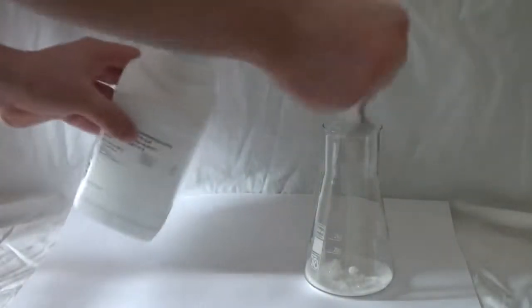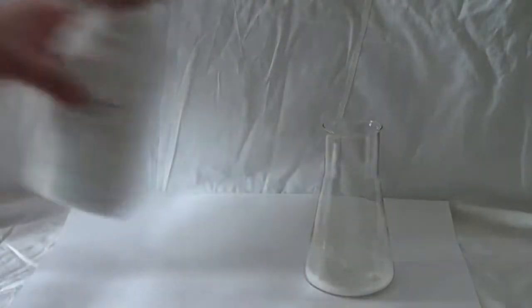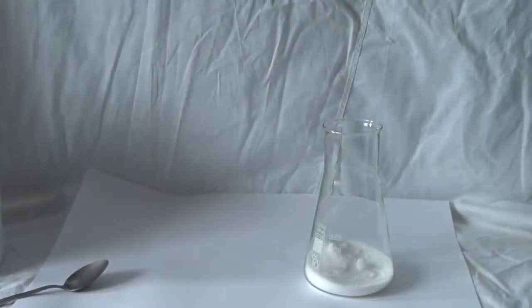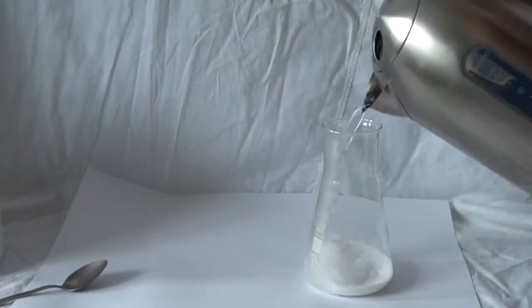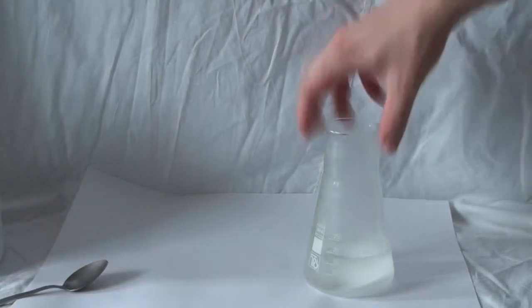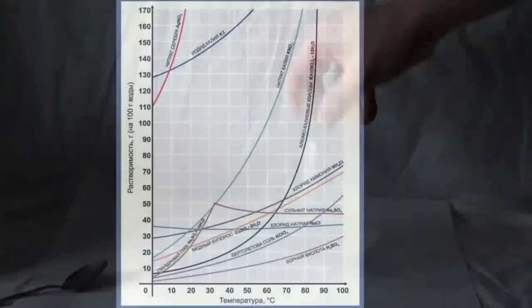To begin, let's take any vessel and pour some of our salt. Next, pour hot water into the vessel and keep adding salt until it is no longer dissolvable. In this case, we get a saturated solution. Be sure to add hot water to be safe with the proportions.